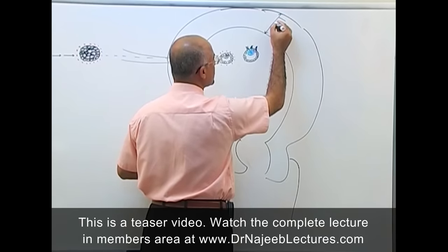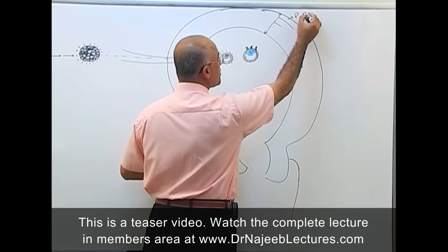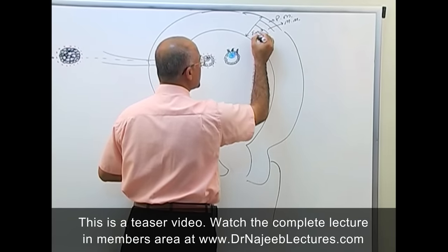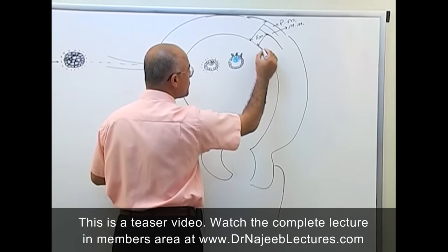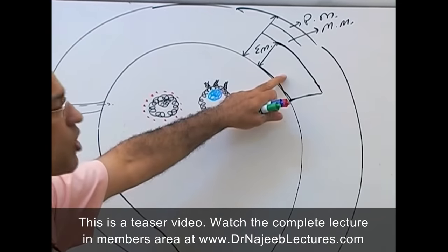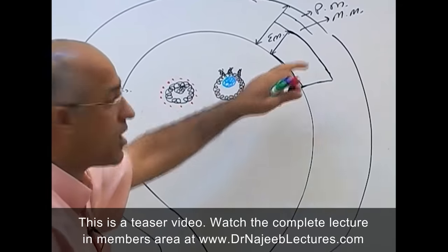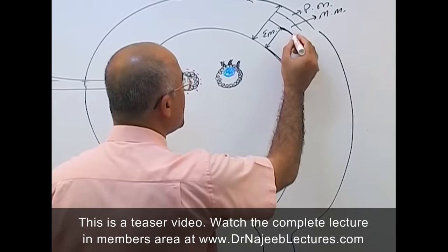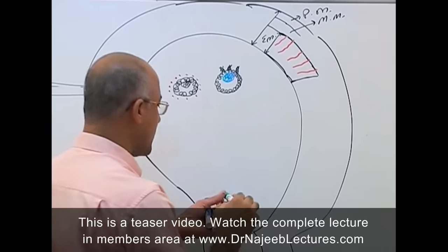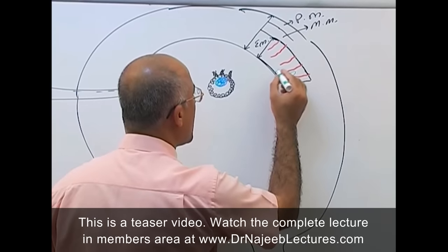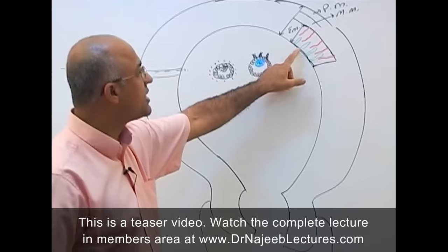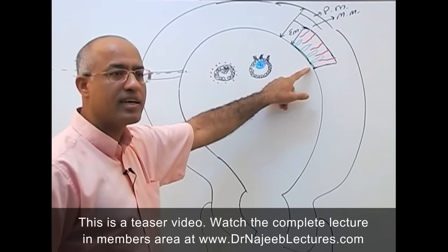The uterine wall has three layers: the outermost perimetrium, then the myometrium, and inside is the endometrium. In the second half of the reproductive cycle, the endometrial layer has been under strong influence of both estrogen and progesterone, becoming highly vascular, with glands undergoing secretory changes, and cells accumulating glycogen and lipids.